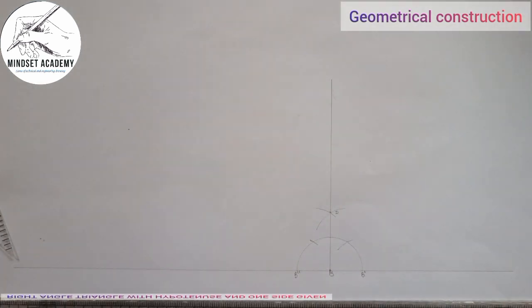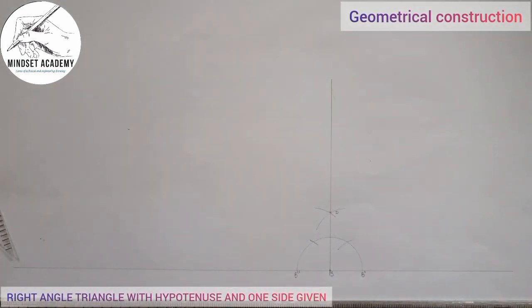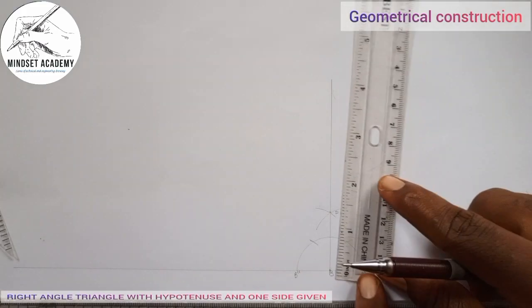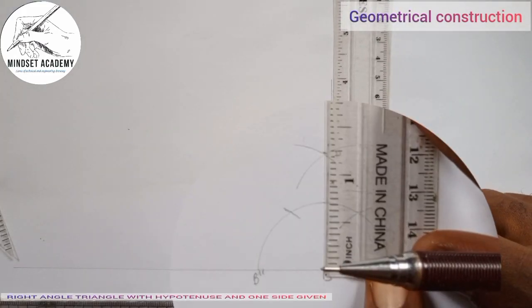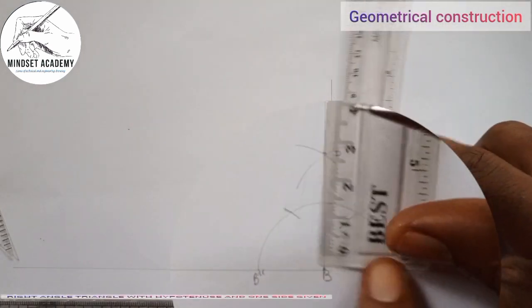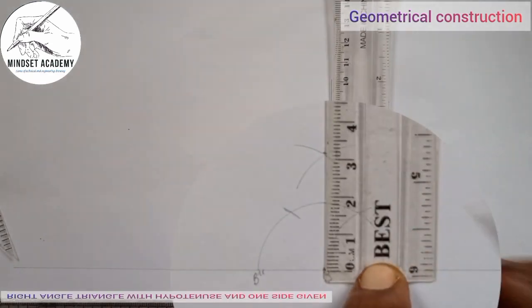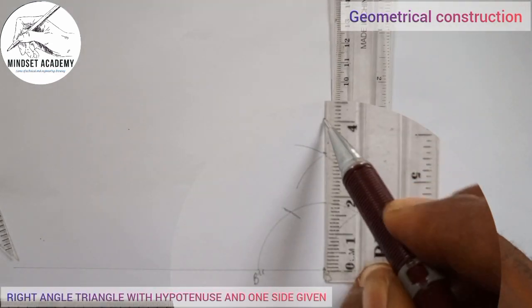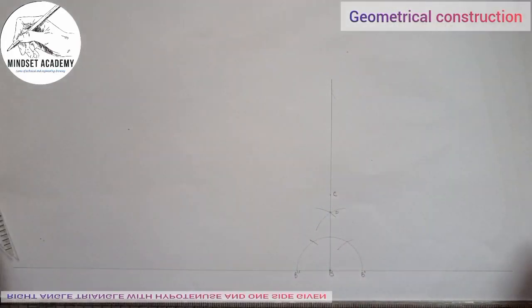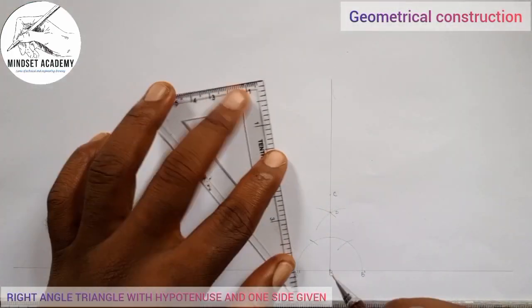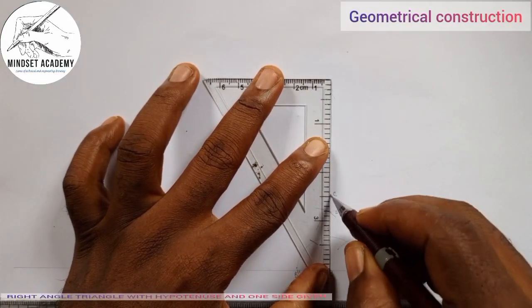So BC equals 40 millimeters. I'm going to take my meter rule and measure 40 millimeters at that distance. This will be my 40 from this point, taking B as my initial point and zero as my initial point on the meter rule. This will be 40. That will be my point C. I'm going to mark it from this point to this point. That is my BC.